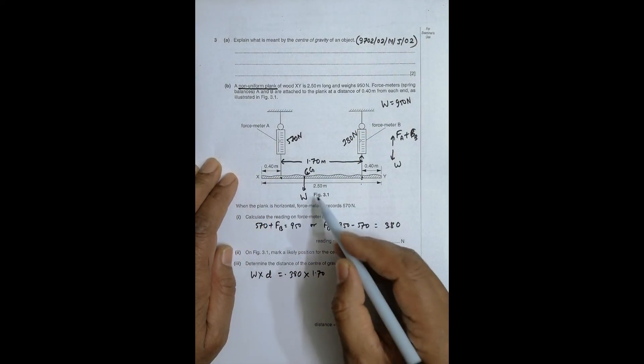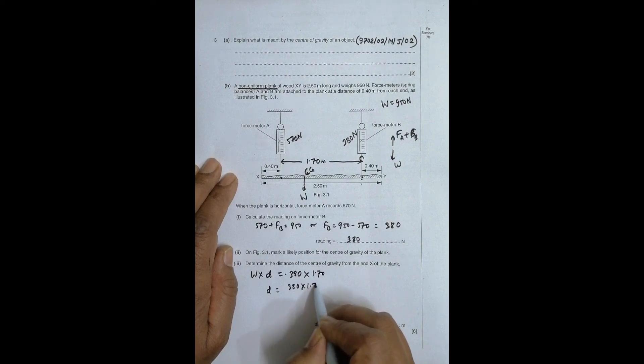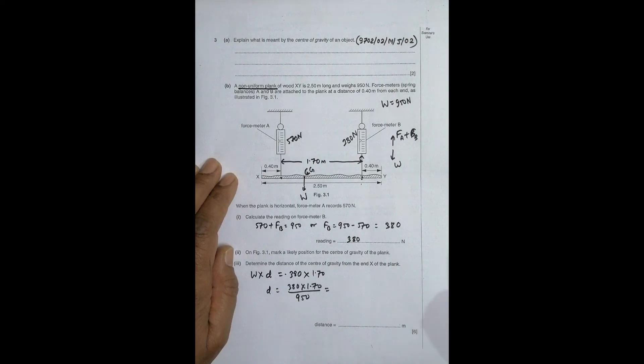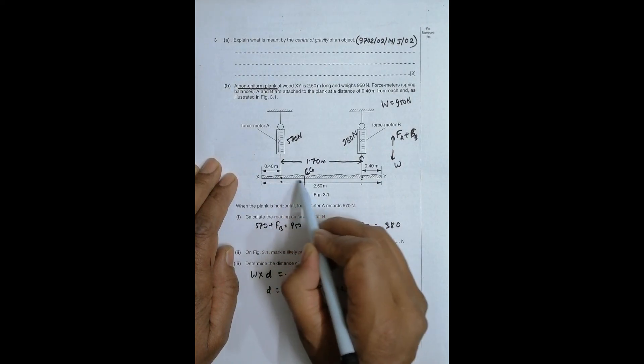So W is equal to 950. So this D is equal to 380 into 1.70 divided by 950. When you do the calculation, it's 380 into 1.7 divided by 950. So it is equal to 0.68 meters. So this distance from here to here is 0.68 meters.